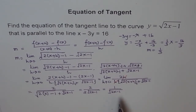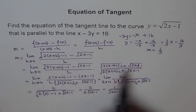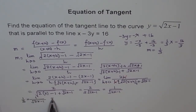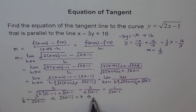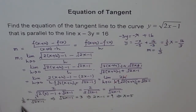This slope must equal 1 over 3. So we set 1 over 3 equals 1 over square root of 2x minus 1. Cross-multiplying gives square root of 2x minus 1 equals 3. Squaring both sides: 2x minus 1 equals 9, so 2x equals 10, giving x equals 5. At x equals 5, the tangent to this curve has slope 1 over 3.